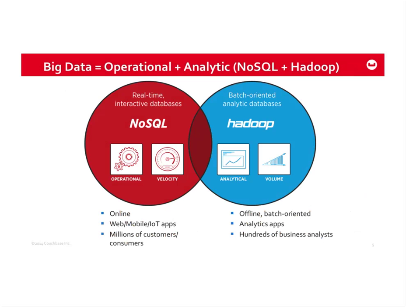From the most basic point of view, they're using Couchbase Server as their NoSQL database for operational workloads — interactive web or mobile applications, millions of customers, where performance is extremely important. On the other side, you have the Hadoop world, which is largely analytical and in some respects offline, tailored to a different audience such as data scientists and business analysts.